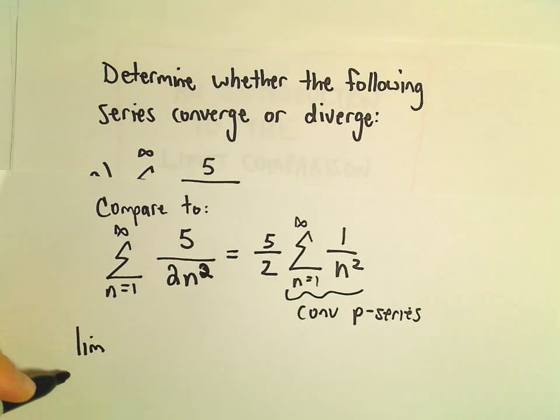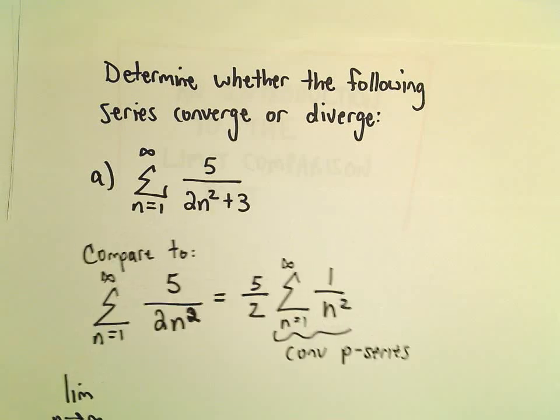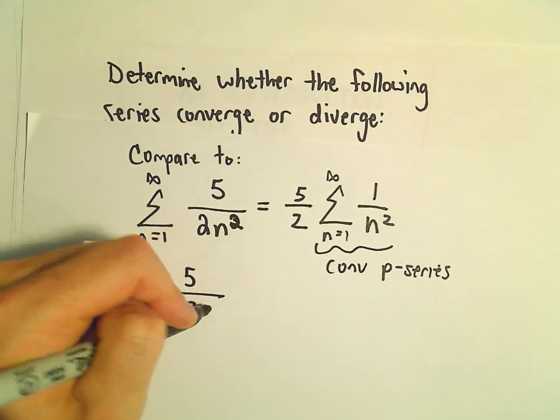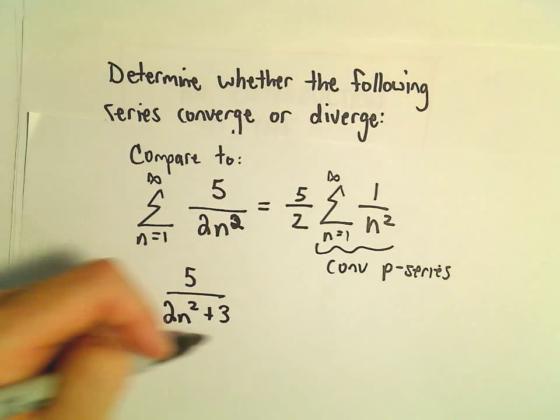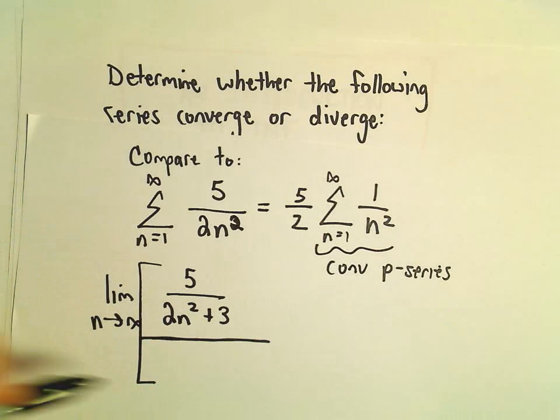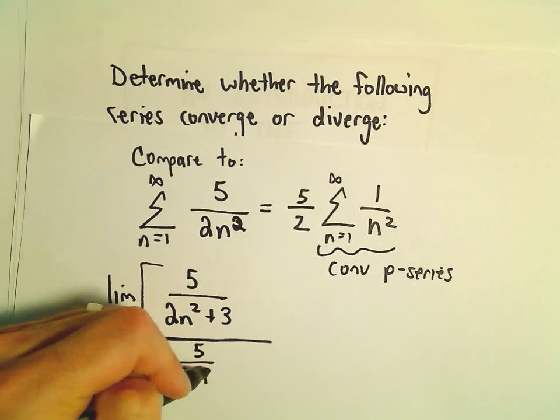So if we do our limit comparison test, we'll do the limit as n goes to infinity. I'm going to take our original series, 5 over 2n² plus 3, and divide that by this series that I'm comparing it to, 5 over 2n².